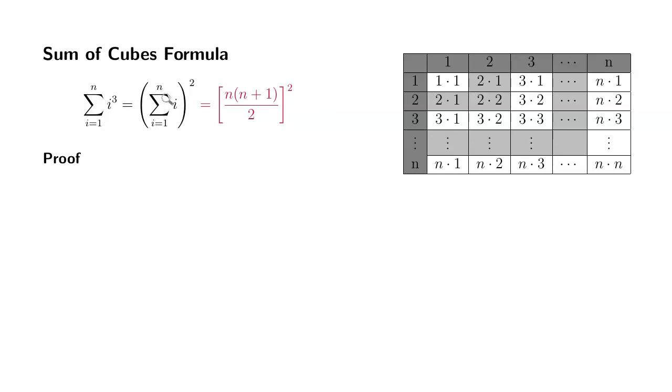Since we already know the formula for summation of i, which is n times n plus 1 over 2, we just have to square that. Let's try to establish this equality here. I'm going to start with the right-hand side and try to see if we can get to the left-hand side.